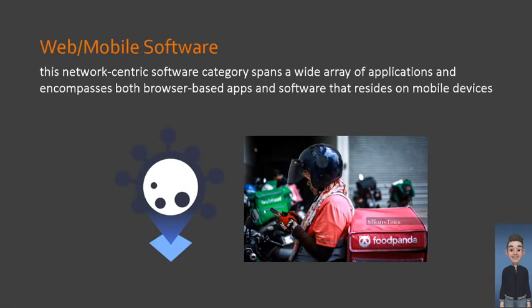We also have web or mobile software. This network-centric software spans a wide array of applications and encompasses both browser-based applications and software that resides on mobile devices. These are like applications but considered a breed of their own, given the different kinds of tools and special usage requirements that mobile or internet users require. The design of such software takes into consideration mobility and remote locations. Good examples are MyCab and Foodpanda.